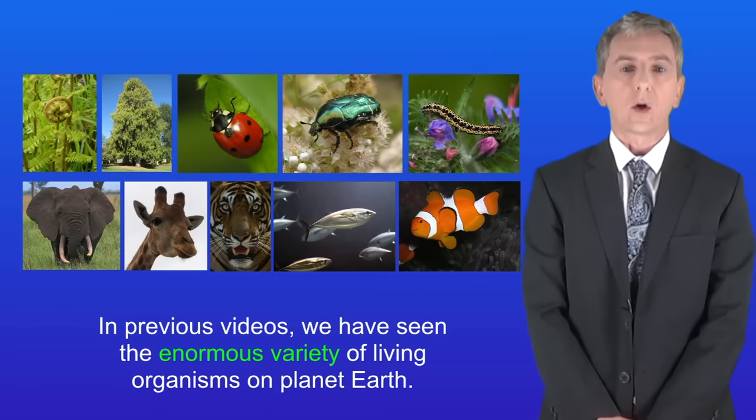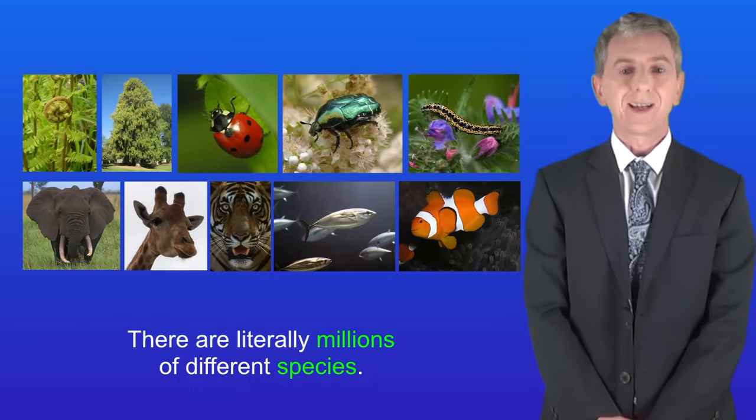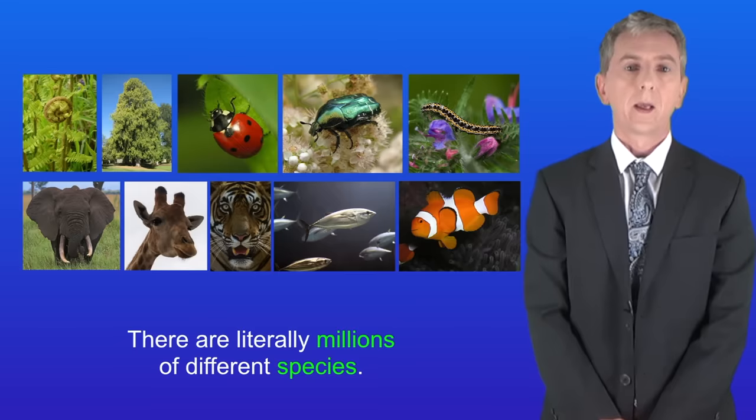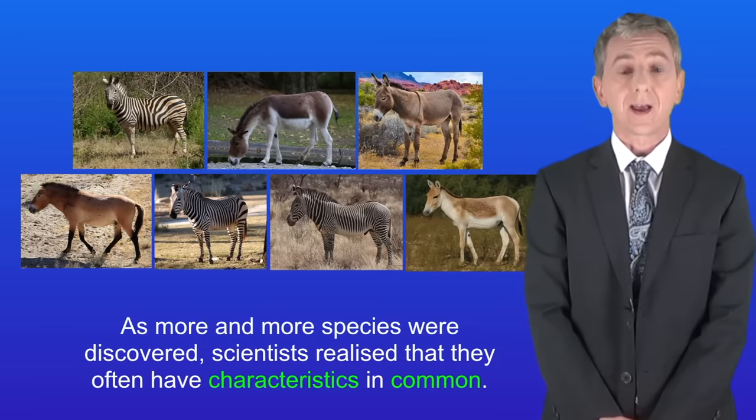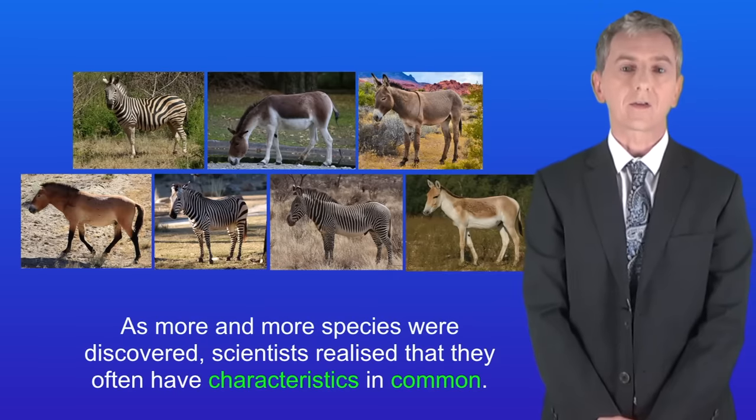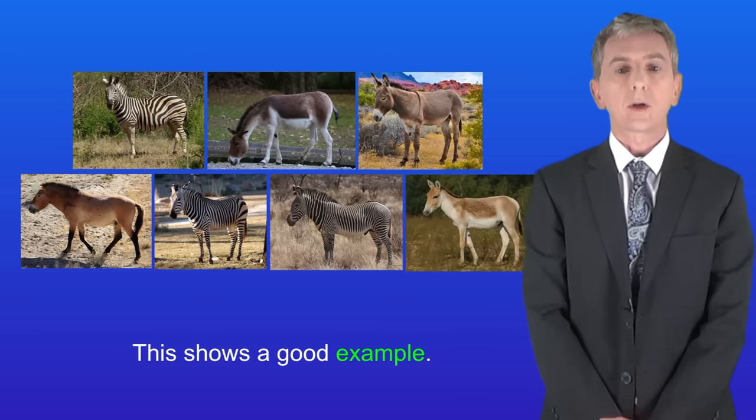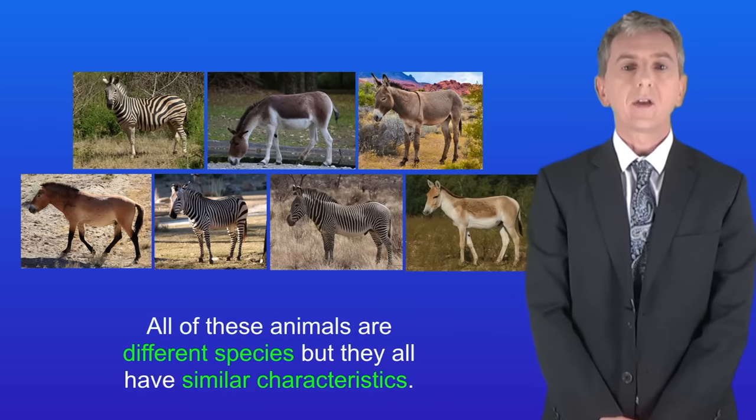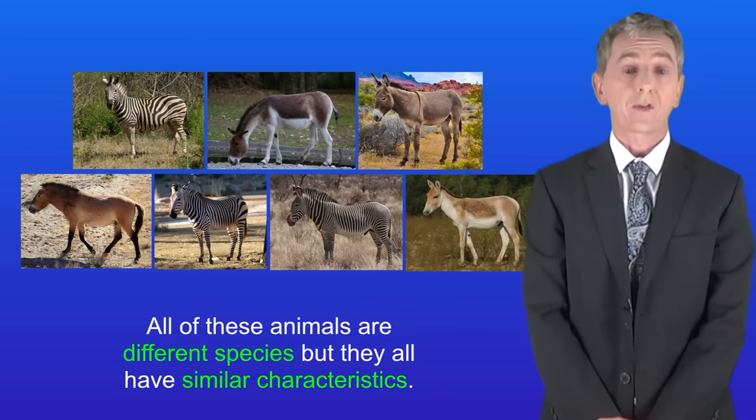In previous videos we've seen the enormous variety of living organisms on planet earth. There are literally millions of different species. As more and more species were discovered scientists realized that they often have characteristics in common. I'm showing you a good example here. All of these animals are different species but they all have similar characteristics.